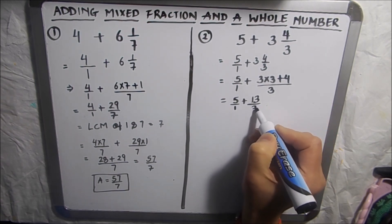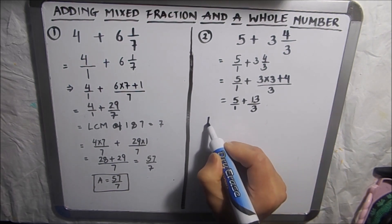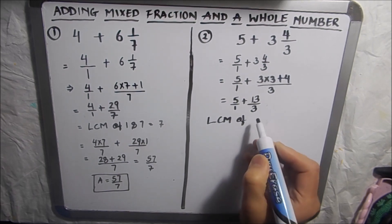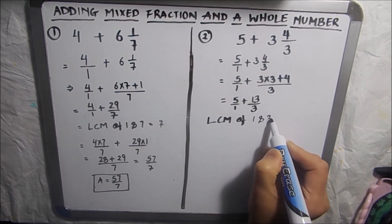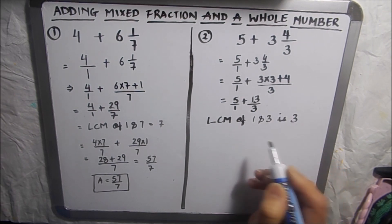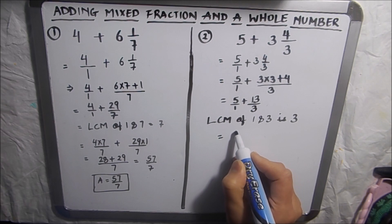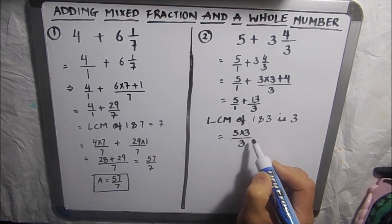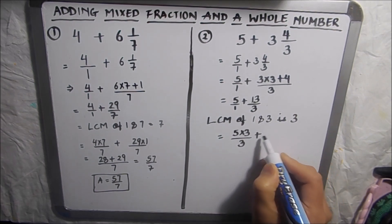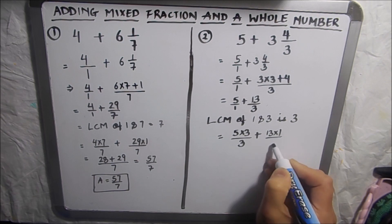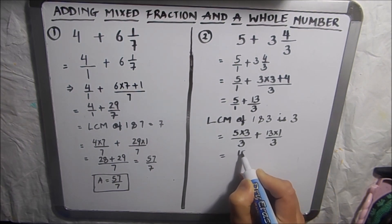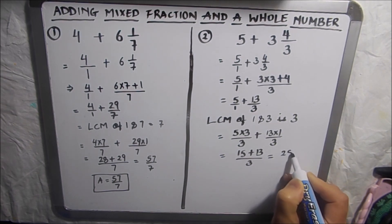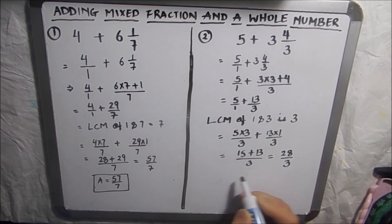So now we have two improper fractions, and the LCM of 1 and 3 is 3. We will write the fractions using the common denominator 3, so this will be 3 times 5 plus 13 times 1 over 3, giving us 15 plus 13 over 3. So this is 28 over 3, and our answer is 28 over 3.